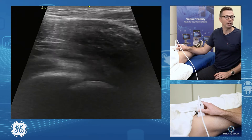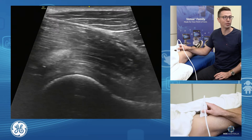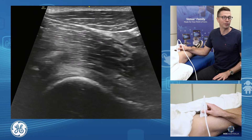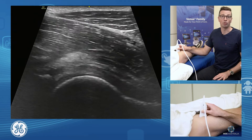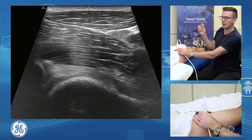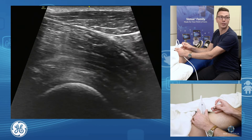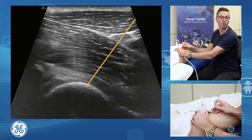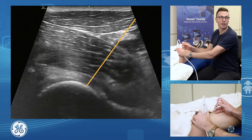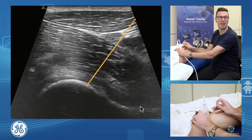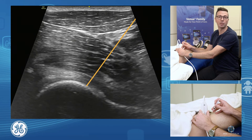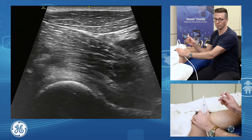For an anterior hip injection or aspiration — if you have an effusion and want to assess the fluid contents, query infection, or inject the hip joint itself — I like a longitudinal approach. Come in longitudinally and bring the needle down from an inferior aspect, dropping down to hit that head-neck junction. Really, as long as you get anywhere underneath the iliofemoral ligament, underneath that joint capsule, you're within the joint. As you inject, you'll see it fill up the space and watch that capsule lift off.